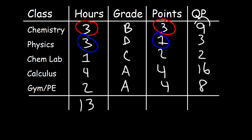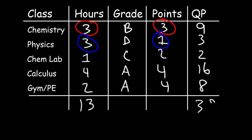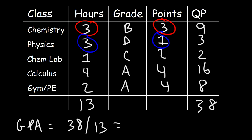Next, sum up the quality points. Nine plus three is twelve, twelve plus two is fourteen, fourteen plus sixteen is thirty, and then plus eight, that's thirty-eight. Now the GPA is the total quality points, which is thirty-eight, divided by the total number of credit hours, which is thirteen. So thirty-eight divided by thirteen is 2.923.